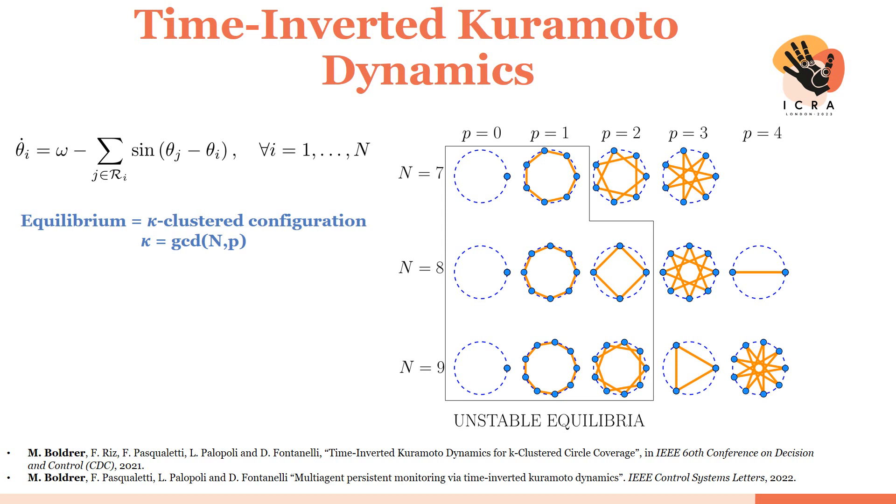The main aspect to keep in mind is that this dynamical system has multiple equilibrium configurations, we call them kappa-clustered configurations.